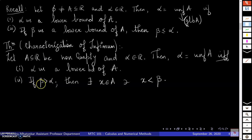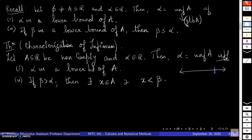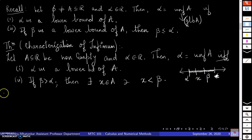The second condition means: if you take any real number beta greater than alpha, you can find a point in A which is less than beta — so beta will not be a lower bound. Alpha is the greatest lower bound; any number greater than alpha cannot be a lower bound. On the number line, alpha is on the left, and if I take any beta greater than alpha, I can find a point x in A less than beta.